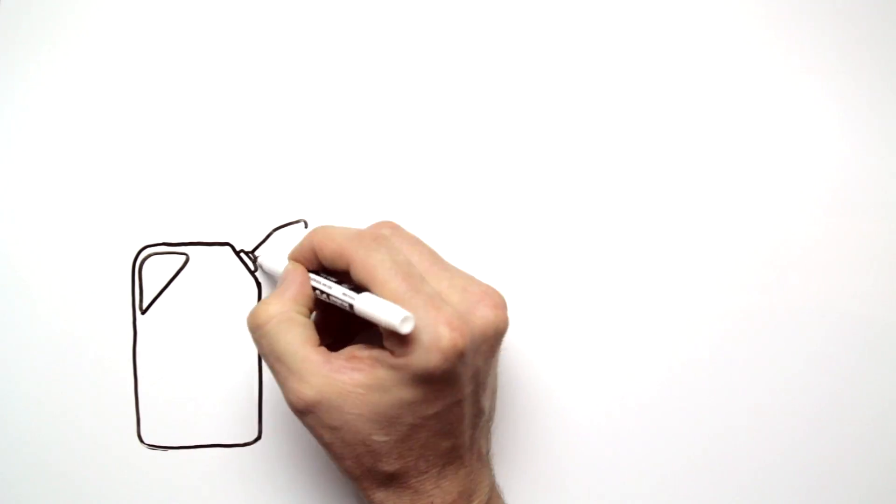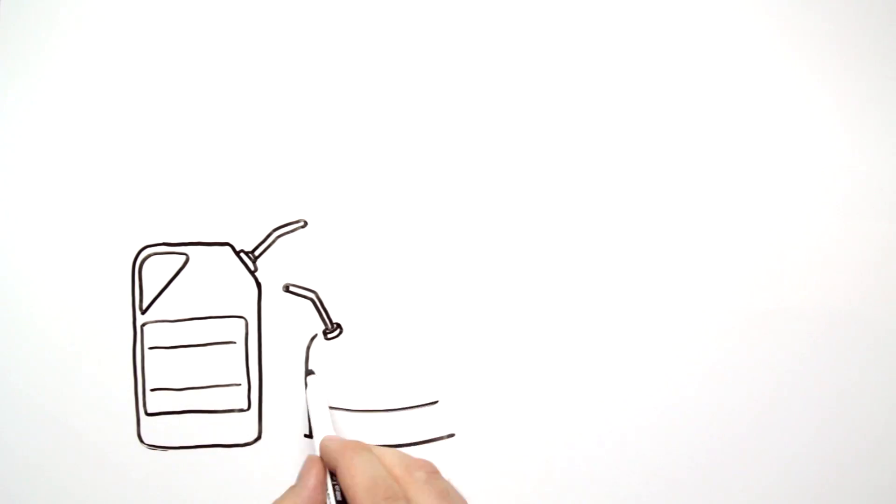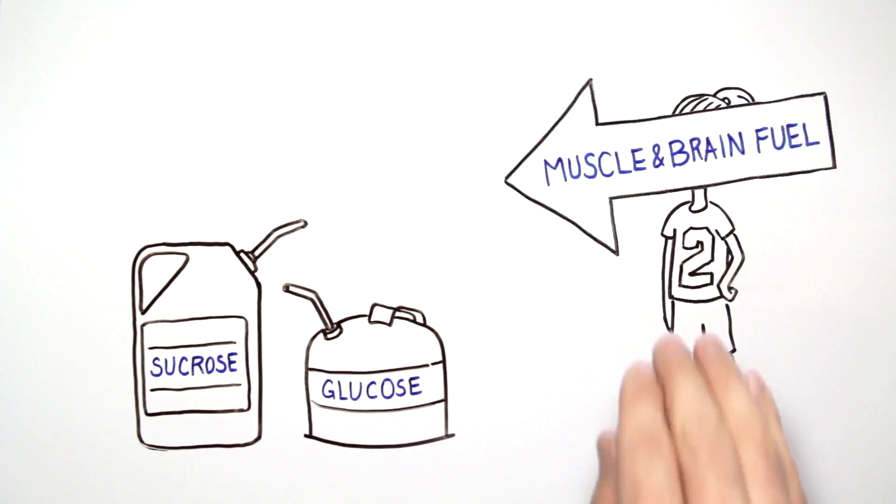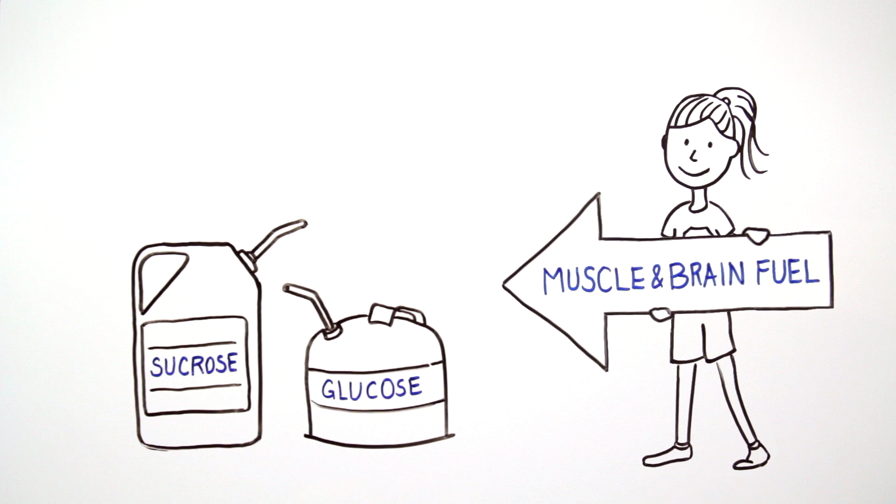During exercise, easily digested and absorbed carbs, including the sugars sucrose and glucose, can be used quickly by the body to provide additional fuel for the muscles and brain.